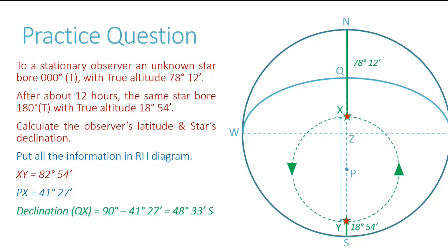A student asks: if a body is not circumpolar, won't it take 24 hours to return to the same meridian? The instructor confirms: a body which is not circumpolar will come back on the meridian after 24 hours — like what happens with the sun. But if a body is circumpolar and you are able to see it crossing your inferior meridian also, then it will appear there after an interval of about 12 hours. So for a circumpolar body, it will come on your inferior meridian after about 12 hours.